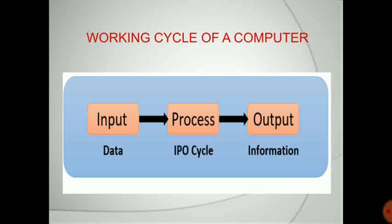Next is the working cycle of a computer — how a computer works. First of all, input: we are inputting the data, as I discussed in the definition. Input means the user gives the input. Then the data and instruction is processed. After processing, it gives the meaningful result — the information. After processing by the CPU, the output comes, the result comes. This is the working cycle of a computer.